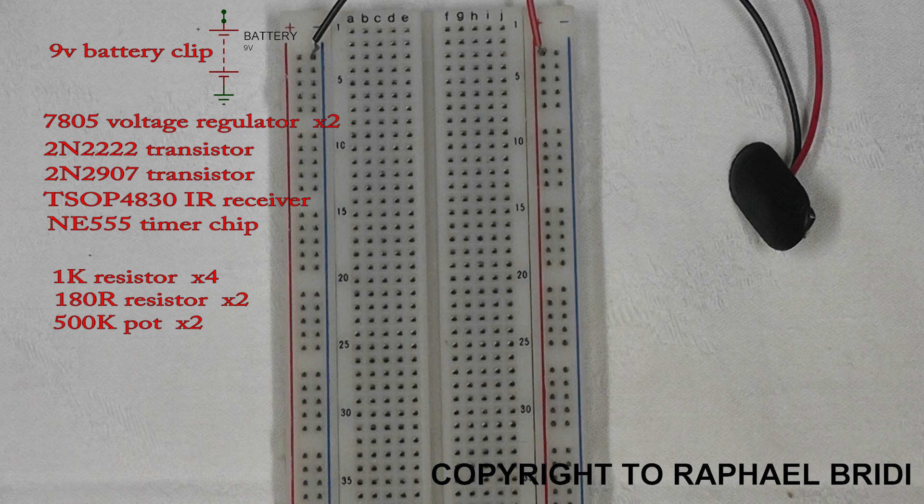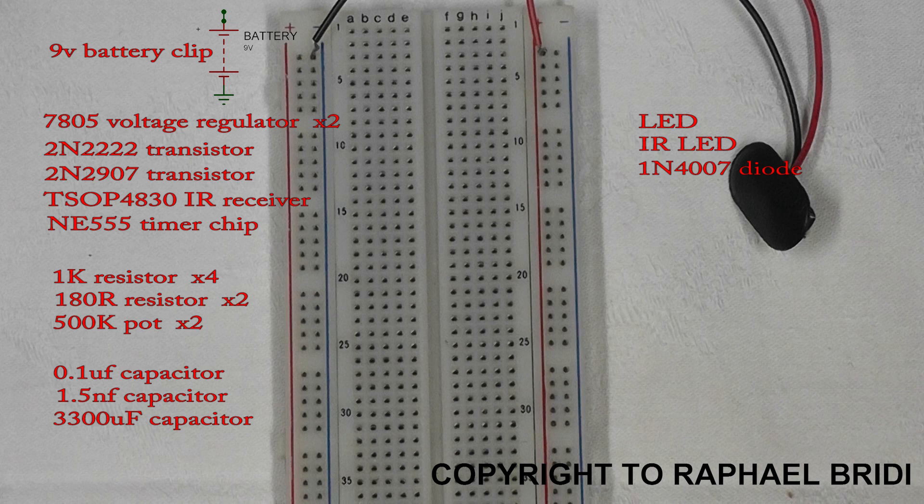You'll need four 1K resistors, two 180 ohm resistors, two 500K pots, a 0.1 microfarad, 1.5 nanofarad, and 3300 microfarad capacitor, an LED and infrared LED, a 1N4007 diode, and of course our 5 volt relay.